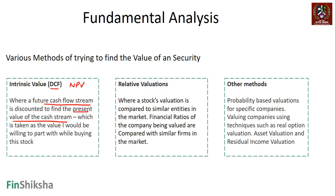The second method for finding the value of a security is something called relative valuation. Here you're comparing the stock's valuation to similar entities in the market — financial ratios of the company being valued are compared with similar firms, and you're basing your judgment on what someone else is paying for a similar company.